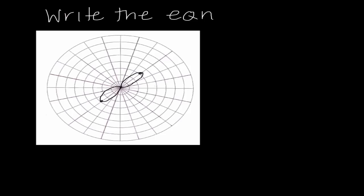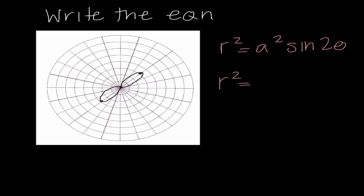For the final concepts, we need to write equations. Looking at a graph with two petals like a bow-tie at 45 degrees, I know it's a lemniscate, and since it's at positive 45 degrees the equation form is r squared equals a squared sine 2 theta. The graph appears to go out 3 units, so the equation is r squared equals 9 sine 2 theta.